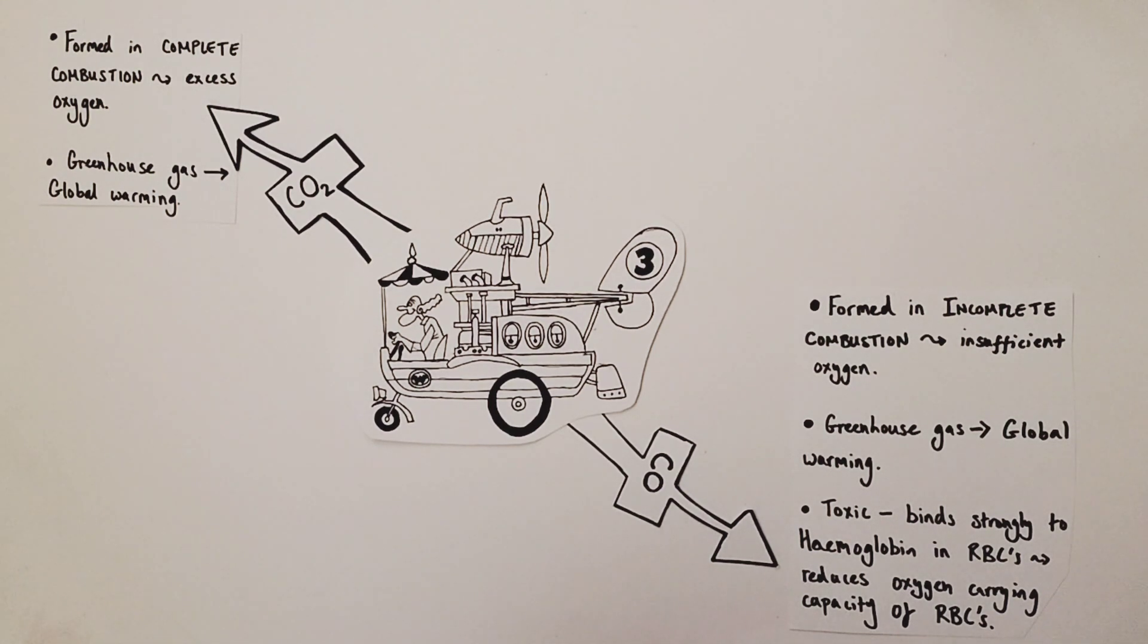However, if Pat Pending's engine wasn't quite as efficient as he hoped, maybe he'd have some incomplete combustion taking place as well. Incomplete combustion is when hydrocarbon fuels burn or combust in an insufficient supply of oxygen, not enough oxygen for the reaction to go to completion. And in the process, it's possible that reaction can generate not carbon dioxide, but carbon monoxide. Carbon monoxide is also a greenhouse gas and would also contribute to global warming. But more pressingly, it is a highly toxic gas.